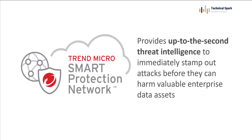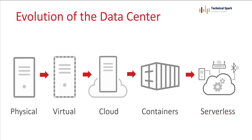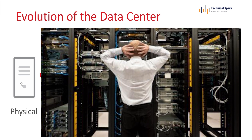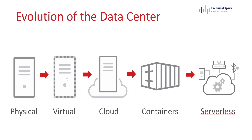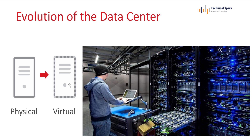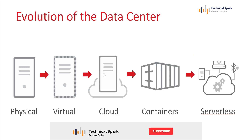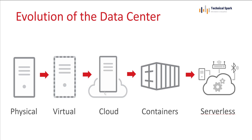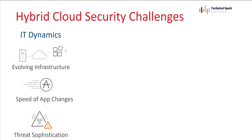Since we are talking about Deep Security, let's understand the evolution of data center workloads. Data centers started with physical servers — people had to maintain thousands of servers, which was a very critical task. Later, everything moved to virtual, meaning a single server can run multiple virtual operating systems for applications. Then it moved to cloud, and now we have containers and serverless. I hope you all know what physical, virtual, cloud, containers, and serverless are.